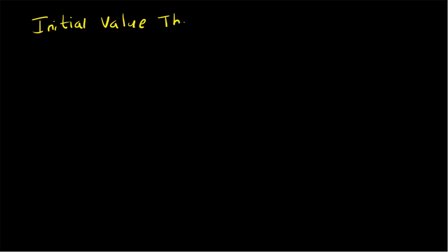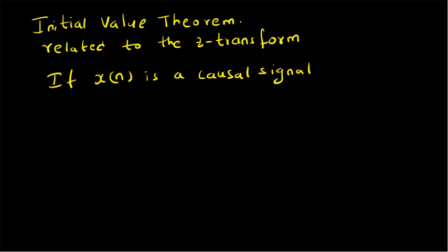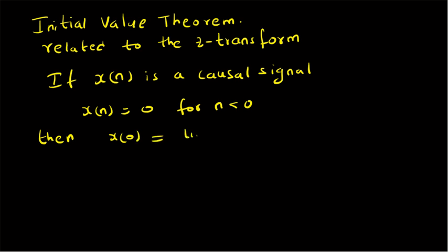Initial value theorem, related to the Z-transform. The theorem can be stated as follows: if X of N is a causal signal, that is X of N is equal to 0 for N less than 0, then X of 0 is given by the limit as Z tends to infinity of X of Z. So the initial value of the signal is given by the value of the Z-transform as Z tends to infinity.